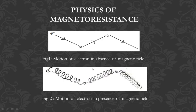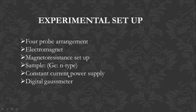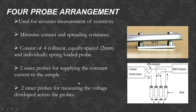The experimental setup consists of a four-probe arrangement, electromagnet, magnetoresistance setup, a germanium n-type sample, constant current power supply, and digital Gauss meter. This is a picture of the four-probe: probes one through four are present, separated by a two-millimeter distance.